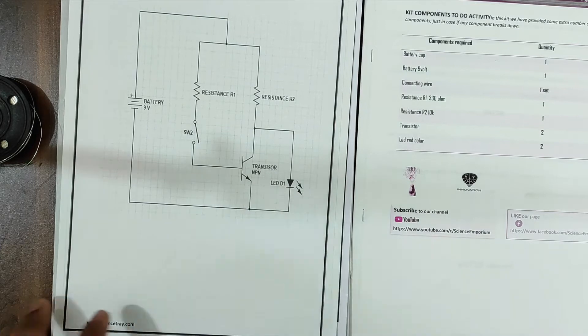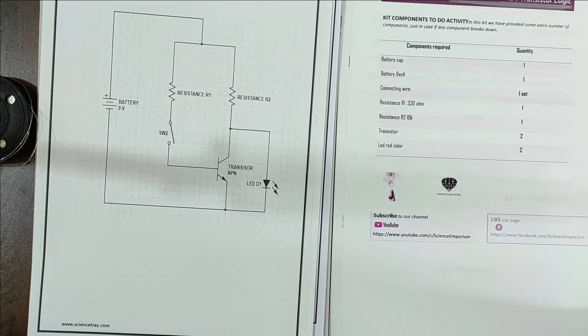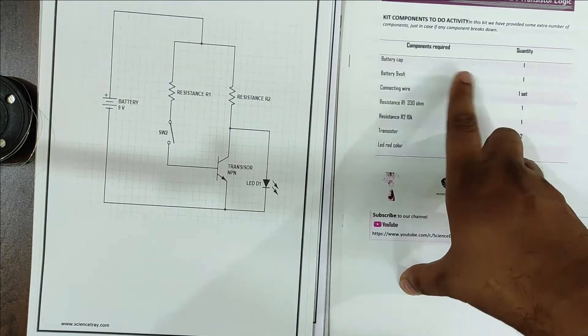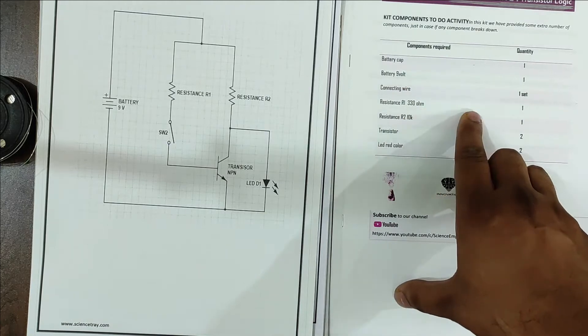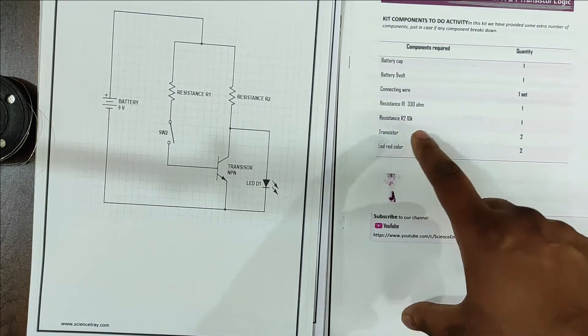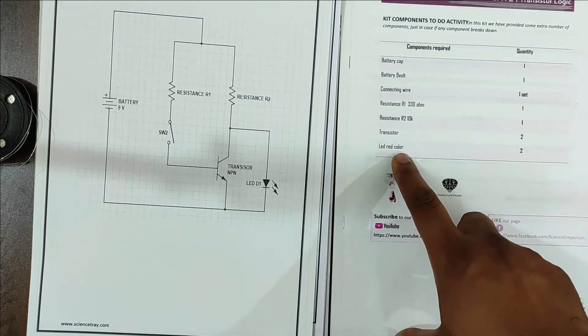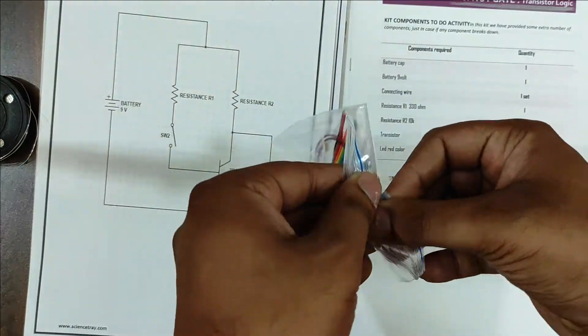First of all we will see what components are required to make this circuit. Number one is battery cap, 9V battery board, connecting wires, resistance 330 ohm, one resistance 10k ohm, transistor 547B, and LED red color. These are the components that we will use.